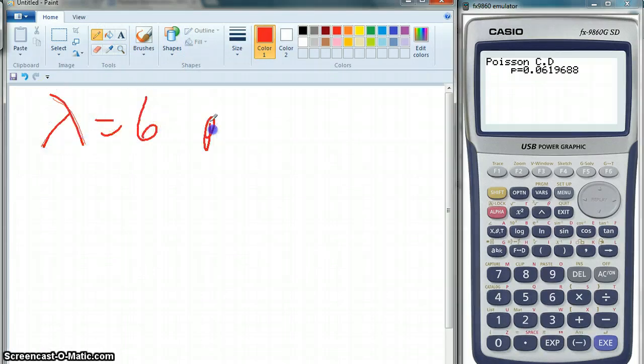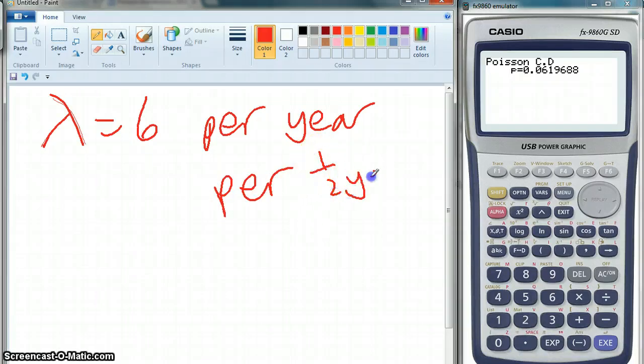So, one of the conditions of the Poisson distribution was that the probability of observing a single event over a small interval is proportioned to the size of that interval. What does this mean in plain English? If it's six per year, then it's how many per half a year? Three. So, we change our lambda.